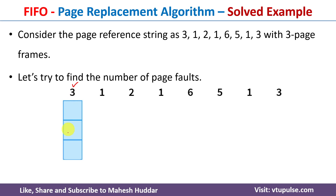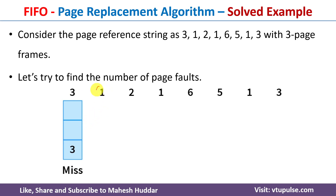Since there is a page fault, we need to remove one of the pages already in primary memory and put 3 there. Because nothing is present, 3 is placed in the first frame. Next, the process requests page number 1. We check whether it is present in primary memory — it is not, so again there is a miss or page fault. Because there is space, we place 1 into the next frame.